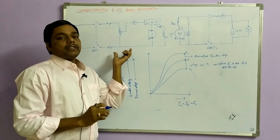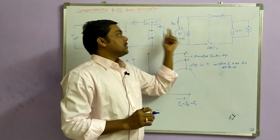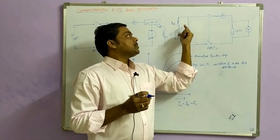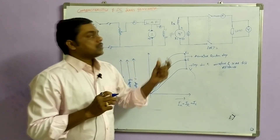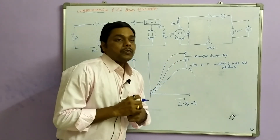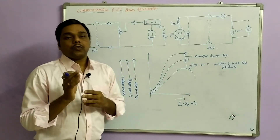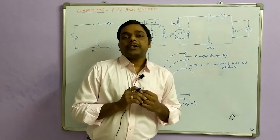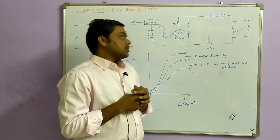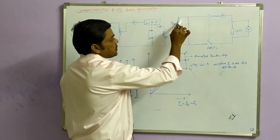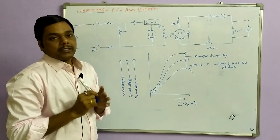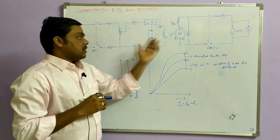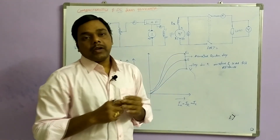Now this is a prime mover DC motor and this is the DC generator. The armature current, series current, and the load current are all the same. I connected one voltmeter across armature and series, and another voltmeter across the load. Now the procedure to find out the three characteristics — no load characteristics, internal characteristics, and external characteristics — is different from your shunt generator and separately excited, similar to separately excited.